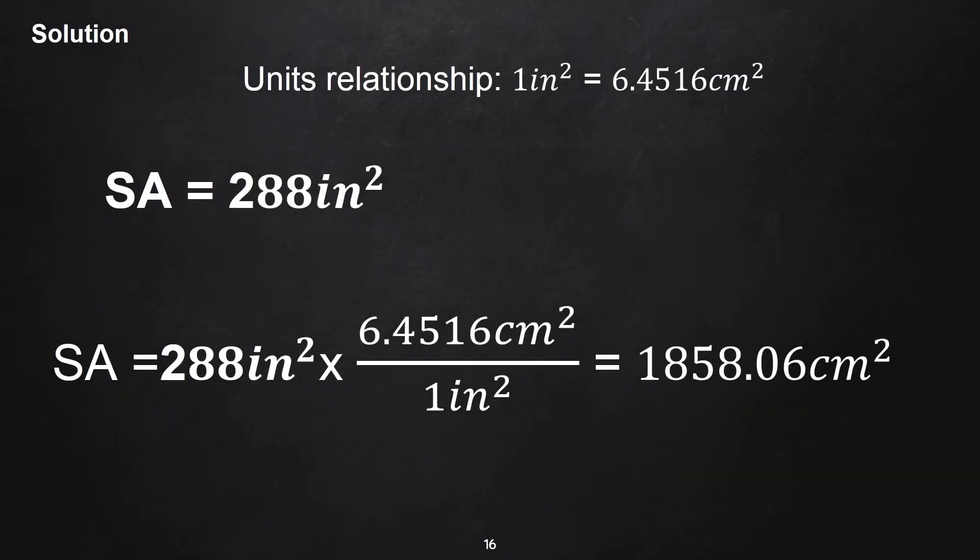For the conversion, just determine the conversion factor from the unit's relationship. So, 288 in² times the conversion factor. We have 1858.06 centimeters squared as the required area of the problem.